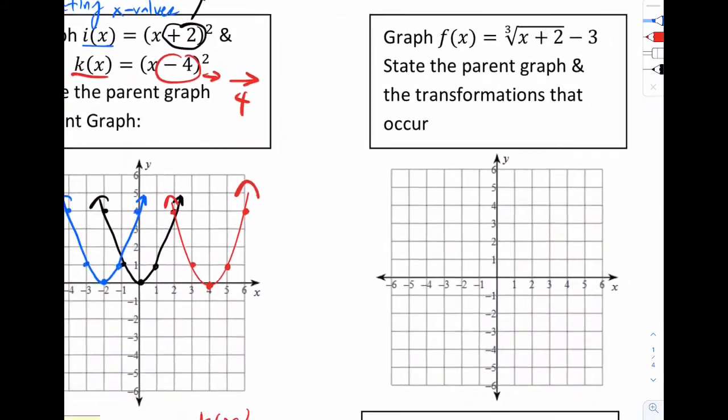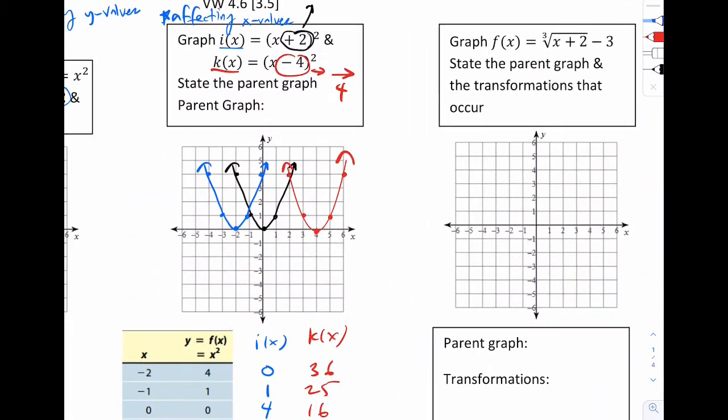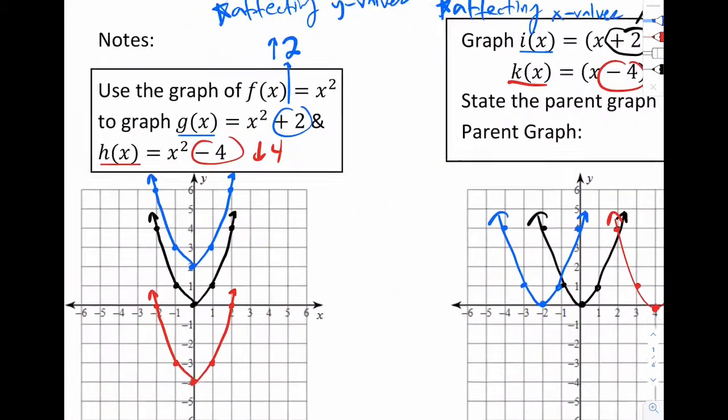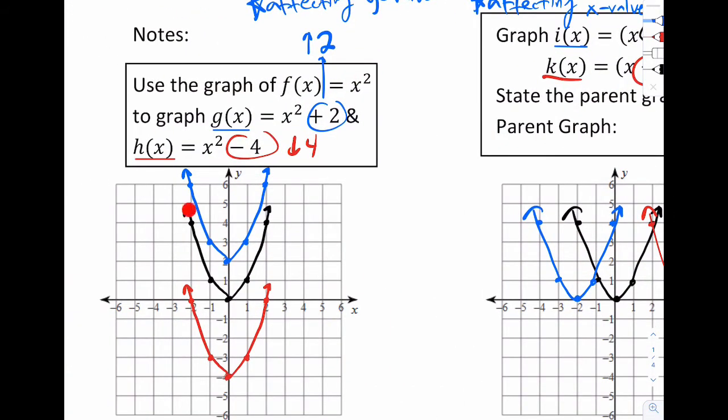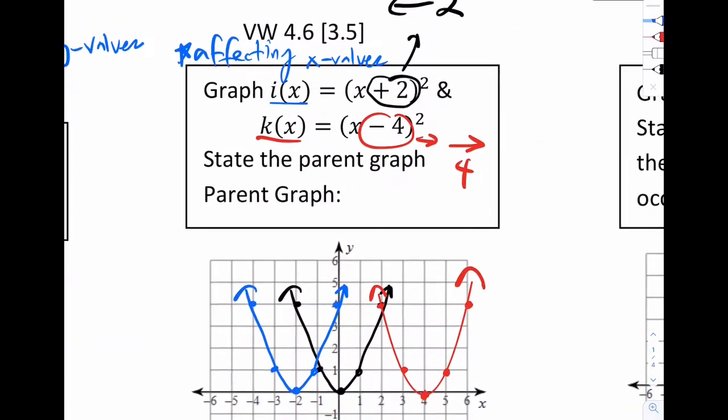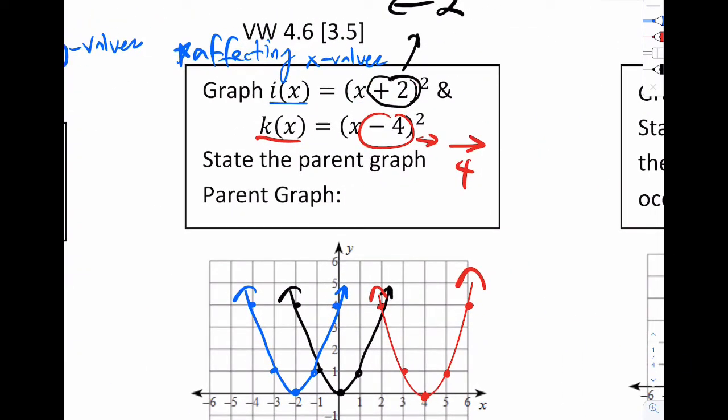So now we go to our next example. It says graph that function. Let's hit the parent graph and the transformations that occur. So parent graph means you have to be able to look at this and figure out, well, what's like the starting point? What's the root or the parent per se? So for these, the parent graph was x squared, right? Because I gave you that. And notice how we're applying these numbers to x squared. In the same way this one, x squared, the parent is x squared. So for this one, I should actually write that. The parent graph is x squared.